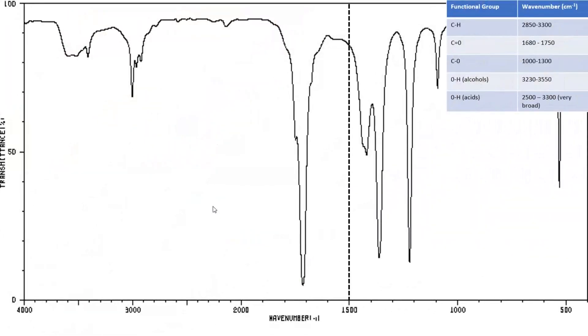Let's look at another example. We've got something very different here. This is propanone, and I'm telling you that straight away. We've got a peak here. This is our C=O, which is totally consistent with having propanone.